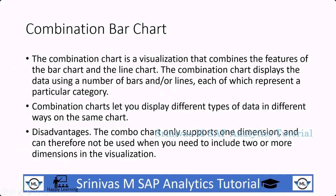What exactly is a combination chart? The combination chart is a visualization that combines the features of the bar chart and the line chart. Along with the bar chart, we can also create a line chart, meaning we can show one line. The combination chart displays data using a number of bars or lines, each representing a particular category.